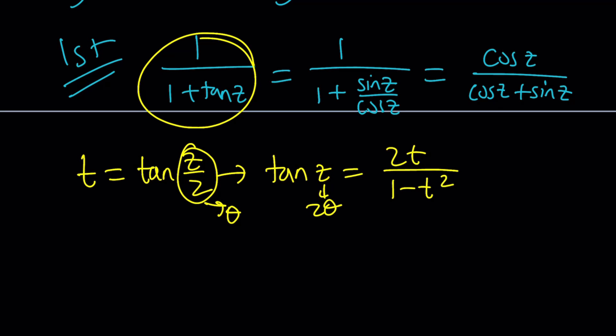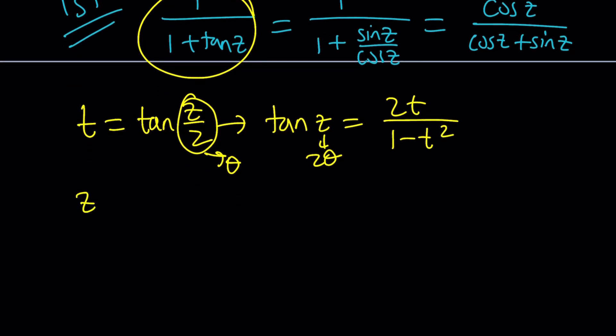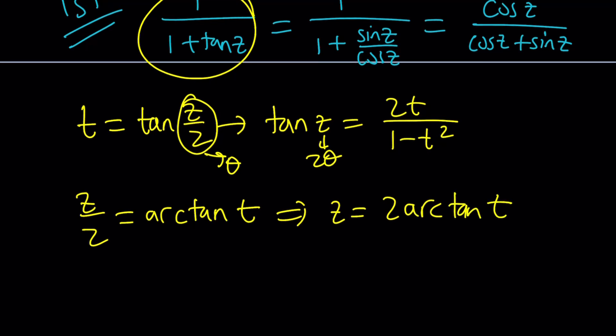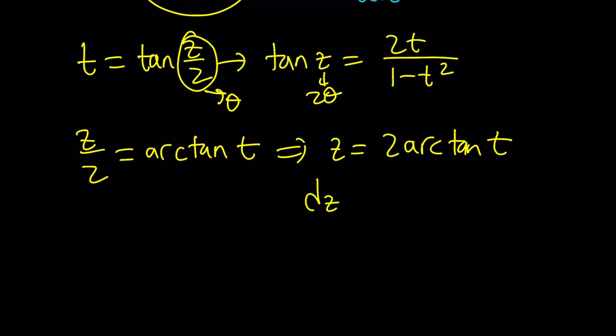And then, of course, by our assumption, z over 2 is going to be arc tangent of t, which is obviously the tan inverse. And from here, z becomes 2 times arc tangent of t. If you differentiate both sides to find dz, you're going to get dz equals 2 times the derivative of arc tangent t, which is 1 over 1 plus t squared. But we do need a dt over 1 plus t squared. So now, we got dz,